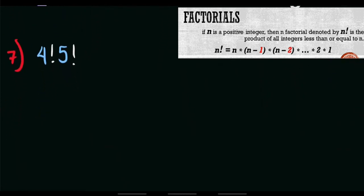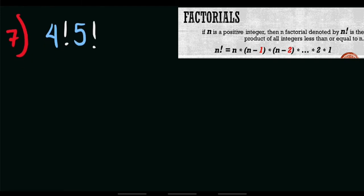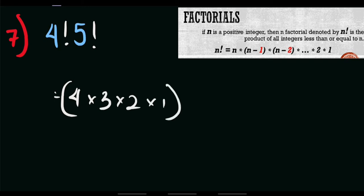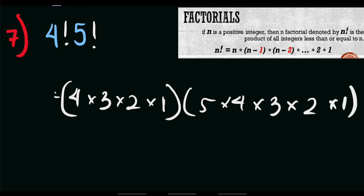For example number 7, what if we are asked to multiply factorials? We have 4 factorial times 5 factorial. 4 factorial equals 4 times 3 times 2 times 1, and we multiply this by 5 factorial, which is 5 times 4 times 3 times 2 times 1. Multiplying all these values together gives a final answer of 2,880.